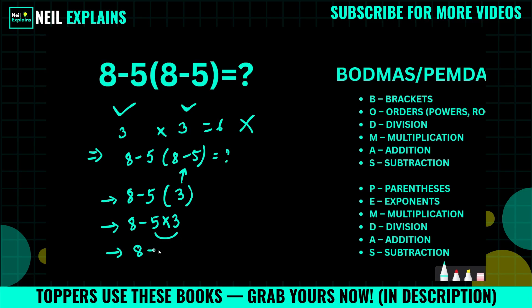8 minus 15. So what will be the answer? We can say we will add as they are in opposite sign, so the answer will be minus 7, because the larger number is 15 which has the negative sign. So the final answer is minus 7.